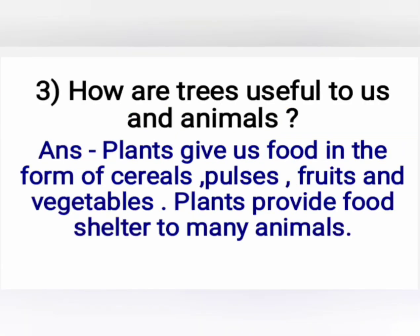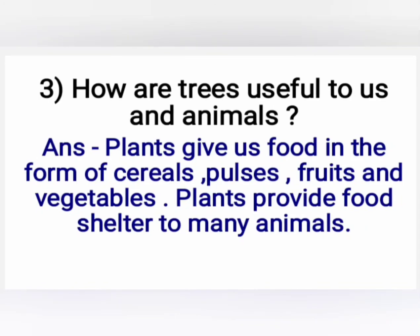Question number three: how are trees helpful to us and animals? The answer is: plants give us food in the form of cereals, pulses, fruits and vegetables. Plants also provide food and shelter to many animals.